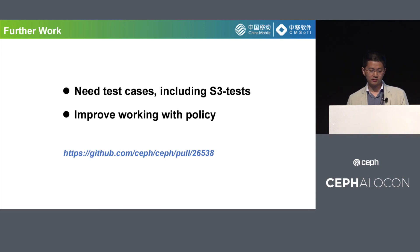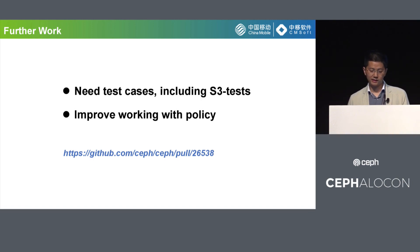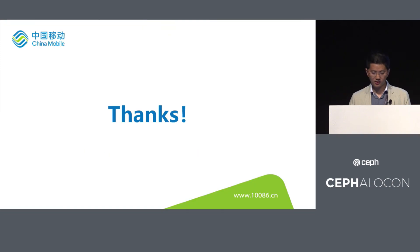There are some work left to be done. The first is test cases — we have to add some test cases to S3 tests. And the second is the policy — the policy supporting object lock also needs to be improved. This is the link of the object lock work. That's all, thanks. Any questions?